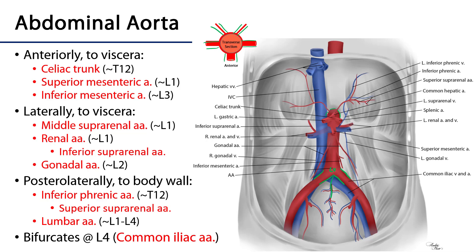The anteriorly oriented branches to viscera tend to be the major conduits to the digestive system. At the level of T12 we have the celiac trunk, which supplies the derivatives of the embryonic foregut with blood. This would be the abdominal part of the esophagus through to the proximal duodenum, with the transition point at approximately the major duodenal papilla of the second part of the duodenum.